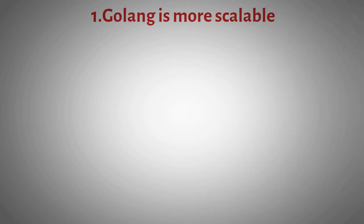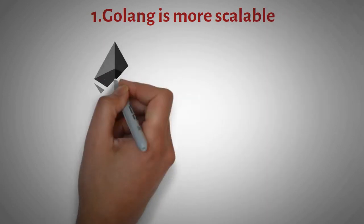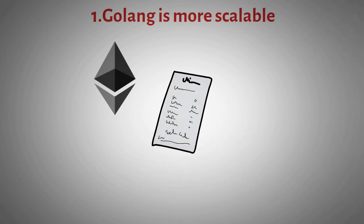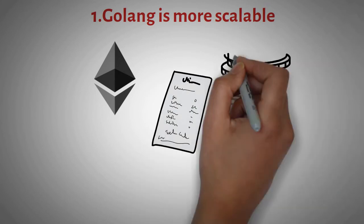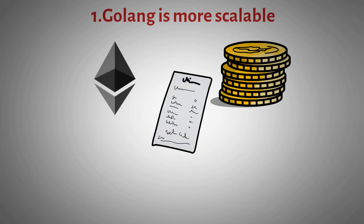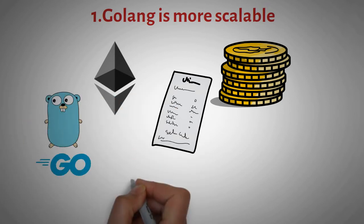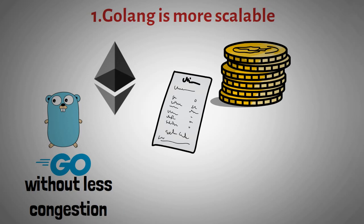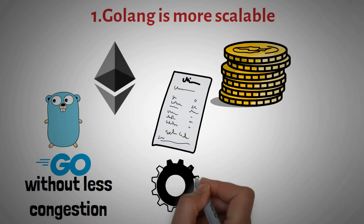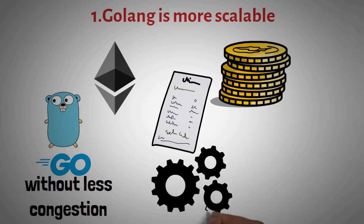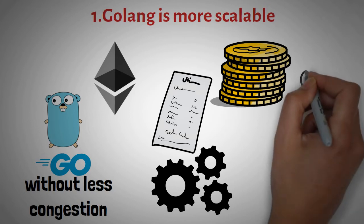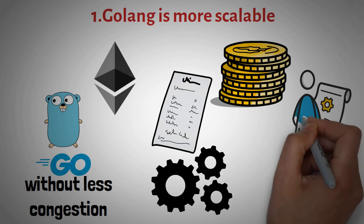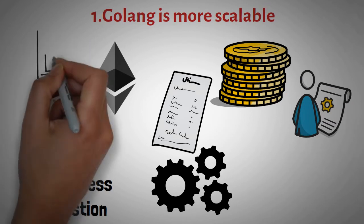One of the main issues with Ethereum is that it can only handle a limited number of transactions at any given time. This has led to congestion and high gas fees during peak periods. However, with Golang, more transactions can be processed at the same time with less congestion. This is made possible since Golang improves the communication between nodes on the network, helping it function more efficiently and preventing any one node from becoming overloaded with data, which in turn reduces the chances of the network slowing down or breaking.